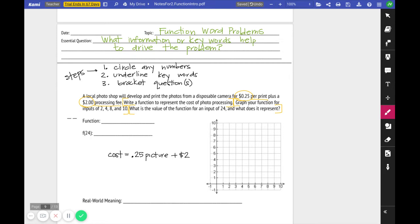So if I want to make that into an actual function, I'm going to set it up as 0.25 and then I'm going to use X. And the reason I'm going to use X is because X will be a variable for the number of pictures that we're working with, and then plus the $2 processing fee.